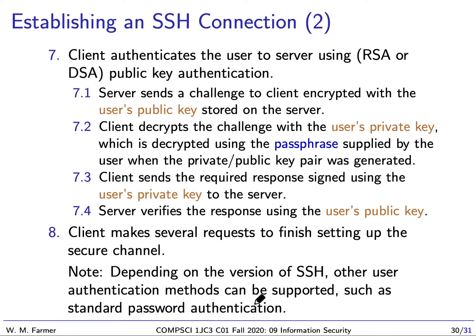The next step is the client authenticates the user to the server. This can be done using a normal password mechanism, but it can also be done using public key authentication, like the RSA algorithm. The server sends a challenge to the client encrypted with the user's public key — the user's public key is stored on the server. The client decrypts the challenge with the user's private key, using a passphrase supplied by the user when the key pair was generated. Then the client sends a required response signed using the user's private key to the server, and the server verifies the response by decrypting it with the user's public key.